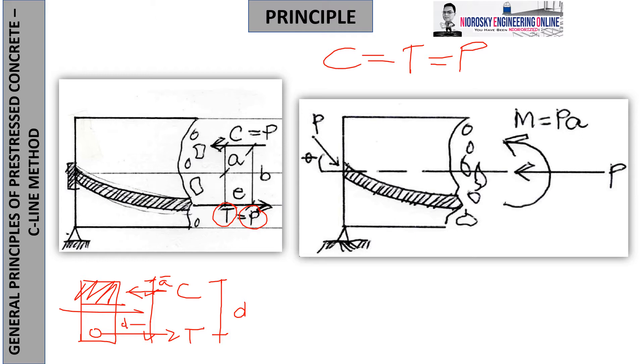This is the same concept in prestressing. We can assign d minus bar a as b. The e is a distance from the CG up to the CGS, and a is just a distance from the compression force up to the neutral axis.